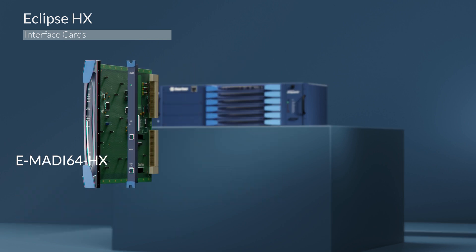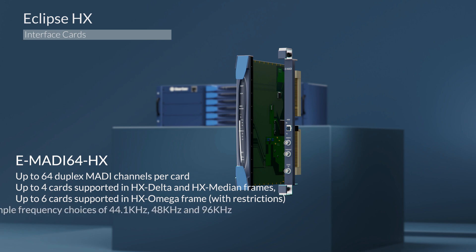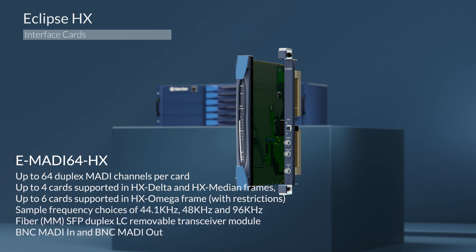The MADI64 supports up to 64 duplex MADI channels per card. Up to 4 cards are supported on the Delta and Medium frames, and up to 6 cards on the Omega. Sample frequencies range from 44.1, 48, and 96 kHz, with selectable channel or port quantity of 32, 56, and 64.